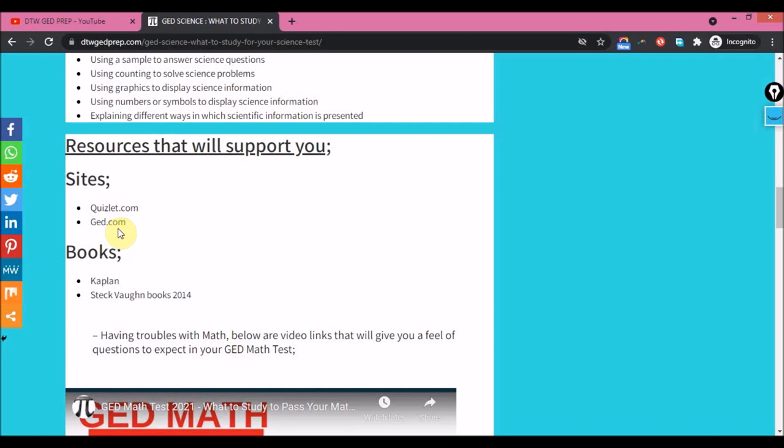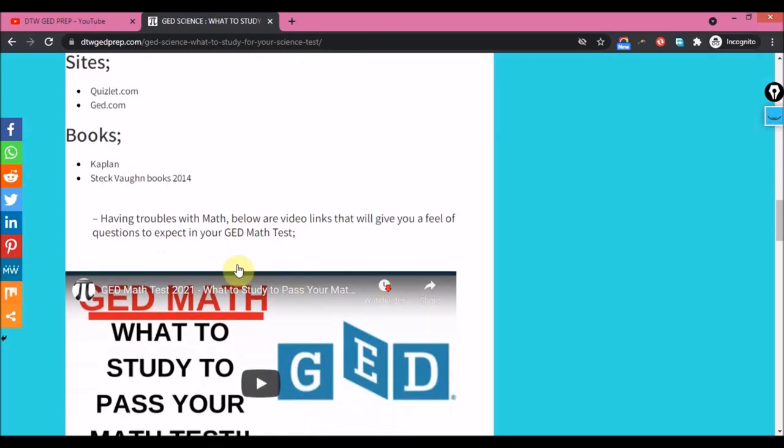You can pay to do some practice tests to also help you. There are other resources like flashcards that can also help you. And for books, you can use the Kaplan and you can use the Steck books from 2014. They are quite good. You can order these from Amazon, and I just dropped some links here.